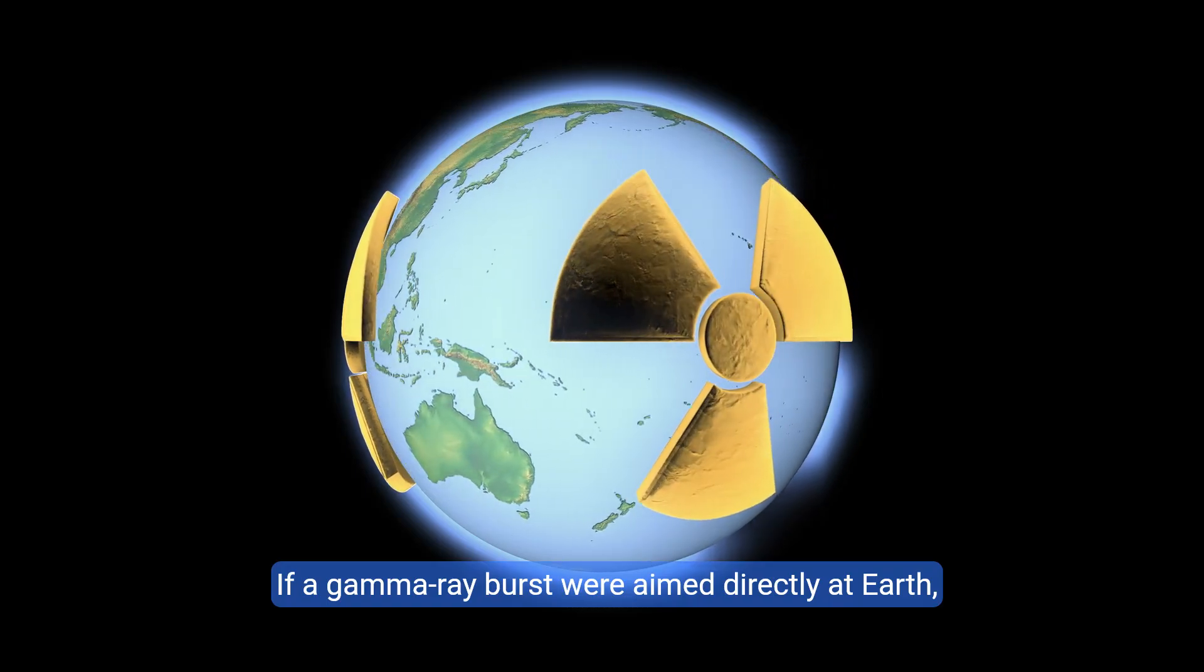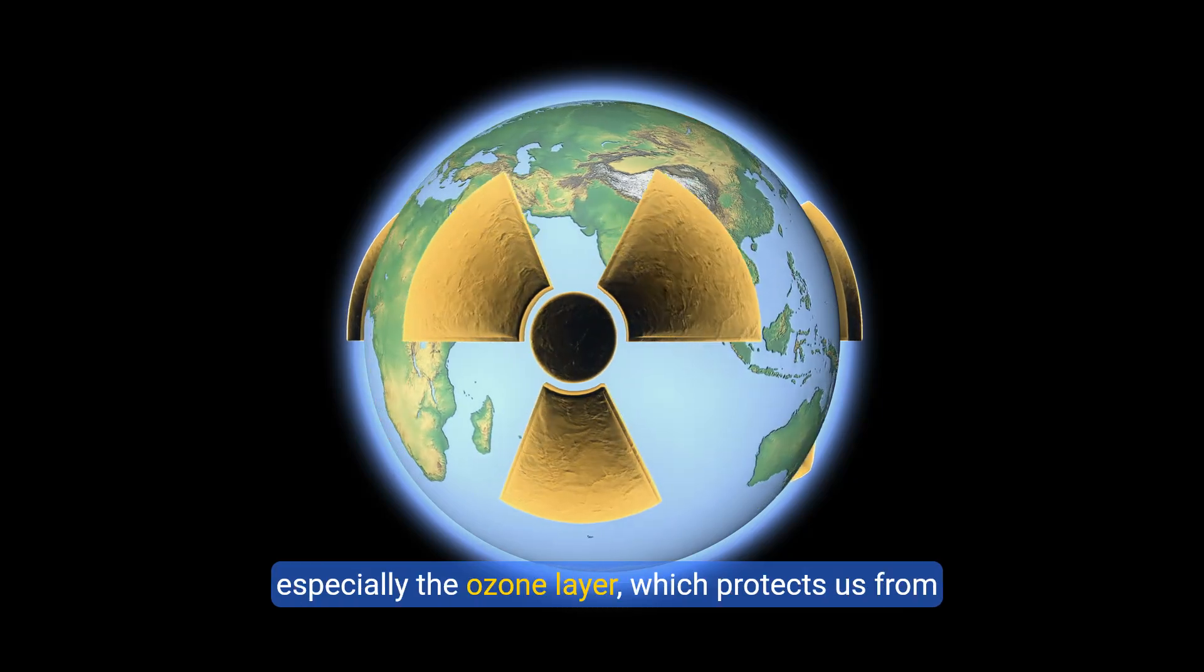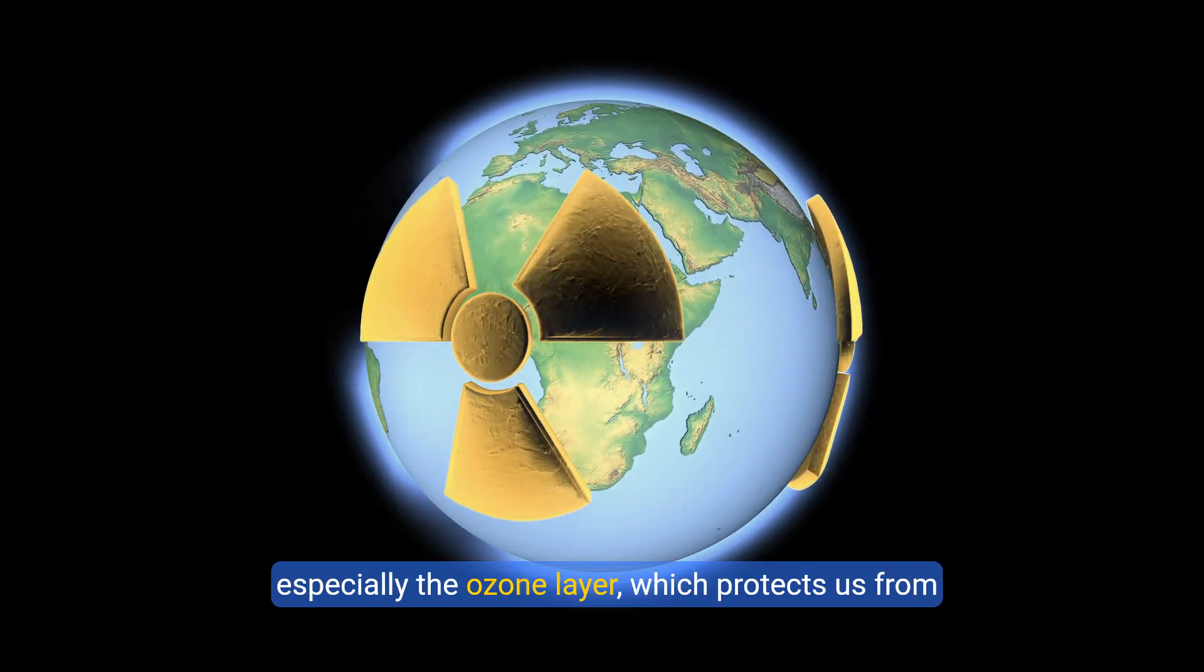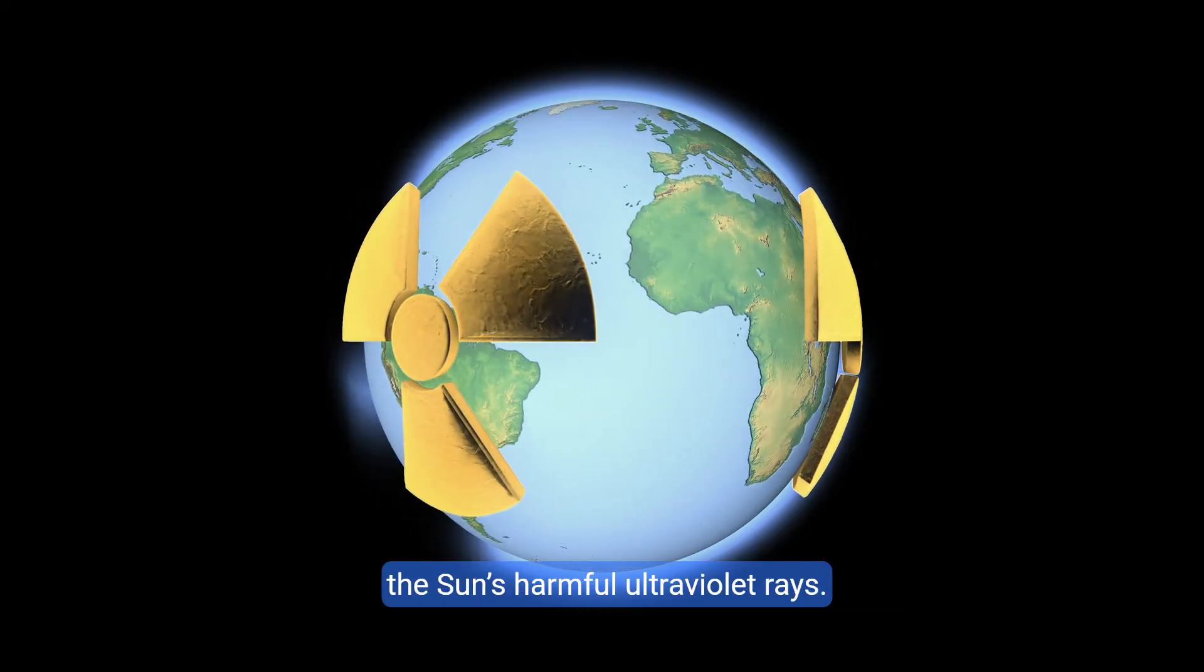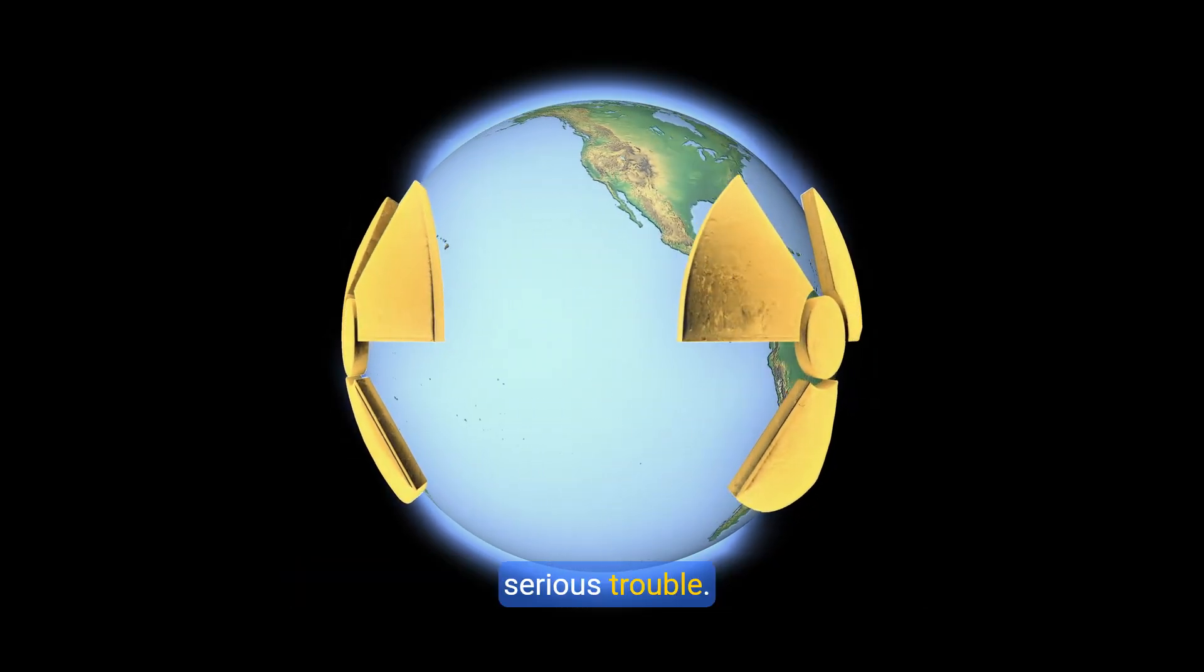If a gamma-ray burst were aimed directly at Earth, it could strip away parts of the atmosphere, especially the ozone layer, which protects us from the Sun's harmful ultraviolet rays. Without this protection, life on Earth could be in serious trouble.